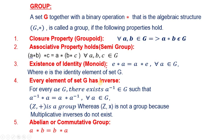Group کی definition میں groupoid، semi-group، monoid اور existence of inverse شامل ہیں۔ آخر میں، ایک group میں اگر commutative property ہو، یعنی a star b = b star a، تو اس group کو ہم abelian یا commutative group کہتے ہیں۔ Abelian group میں پانچوں properties ہوتی ہیں: groupoid، semi-group، monoid، inverse، اور commutative property۔